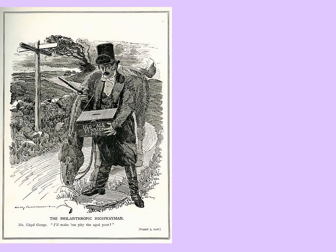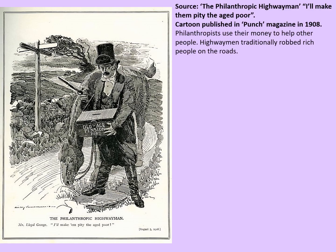This source provides a reaction to David Lloyd George's People's Budget and it's not a favourable one. The source is titled 'The Philanthropic Highwayman', subtitled 'I'll make them pity the aged poor — make them, mark you.' The cartoon was published in Punch magazine in 1908, which was a popular magazine which commented on the affairs of the day. Philanthropists used their money to help other people, whereas highwaymen traditionally robbed rich people using the nation's roads.